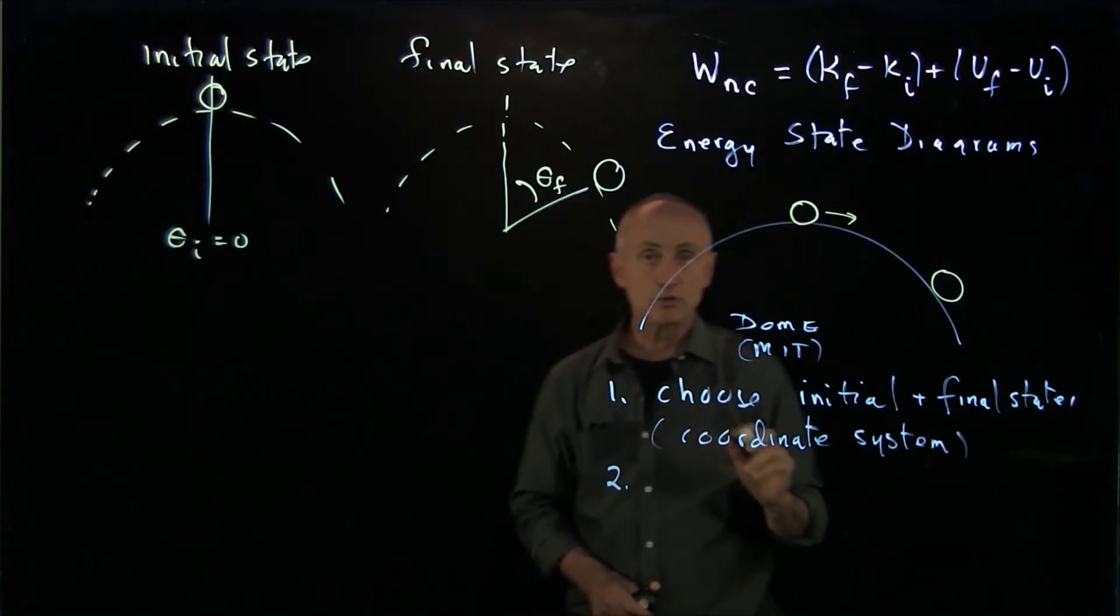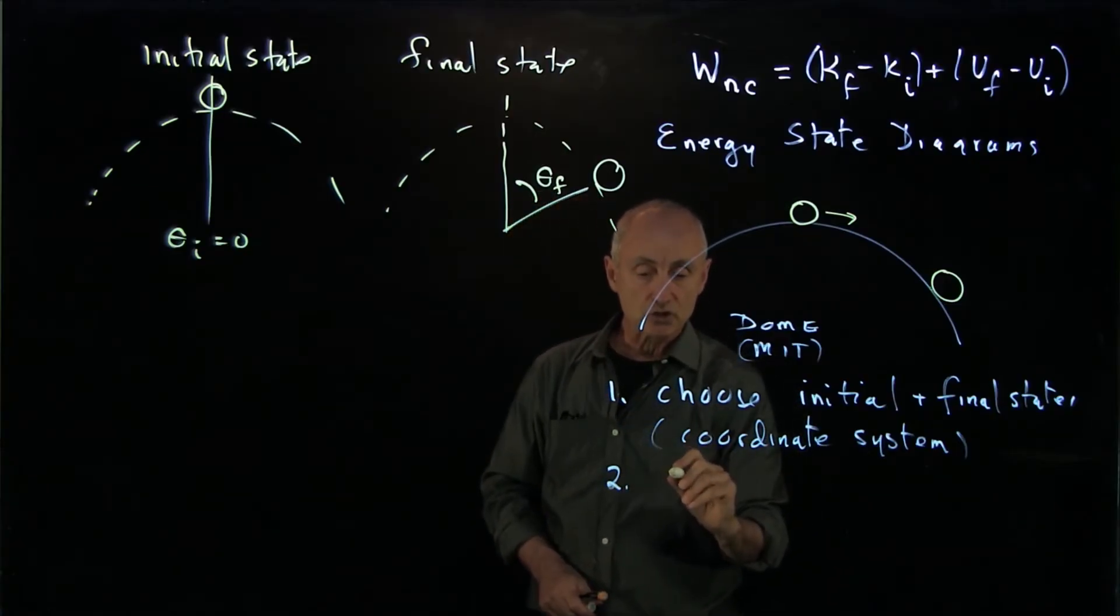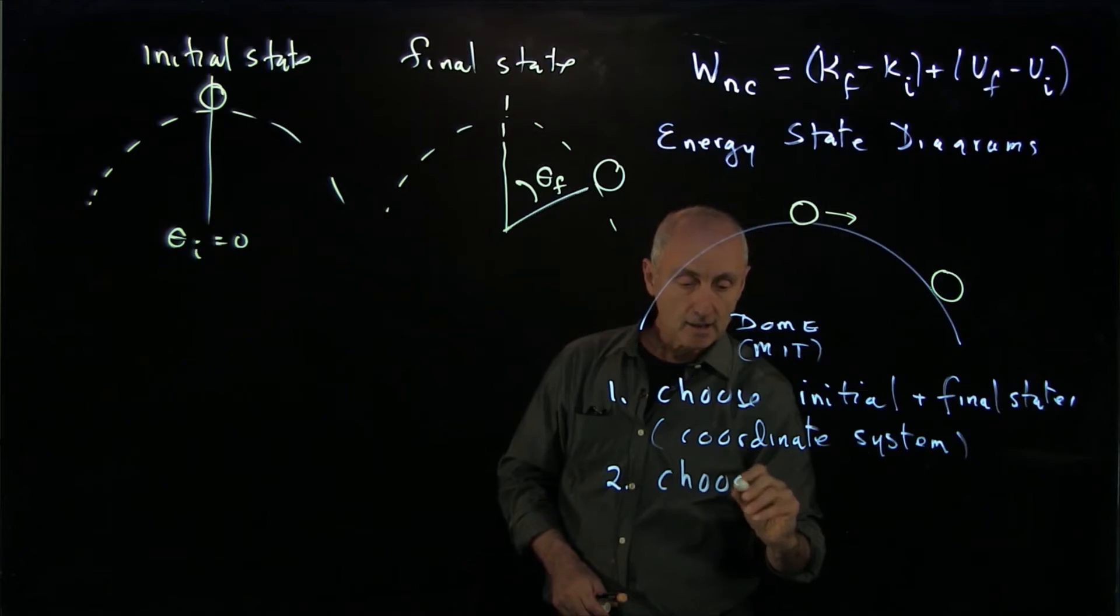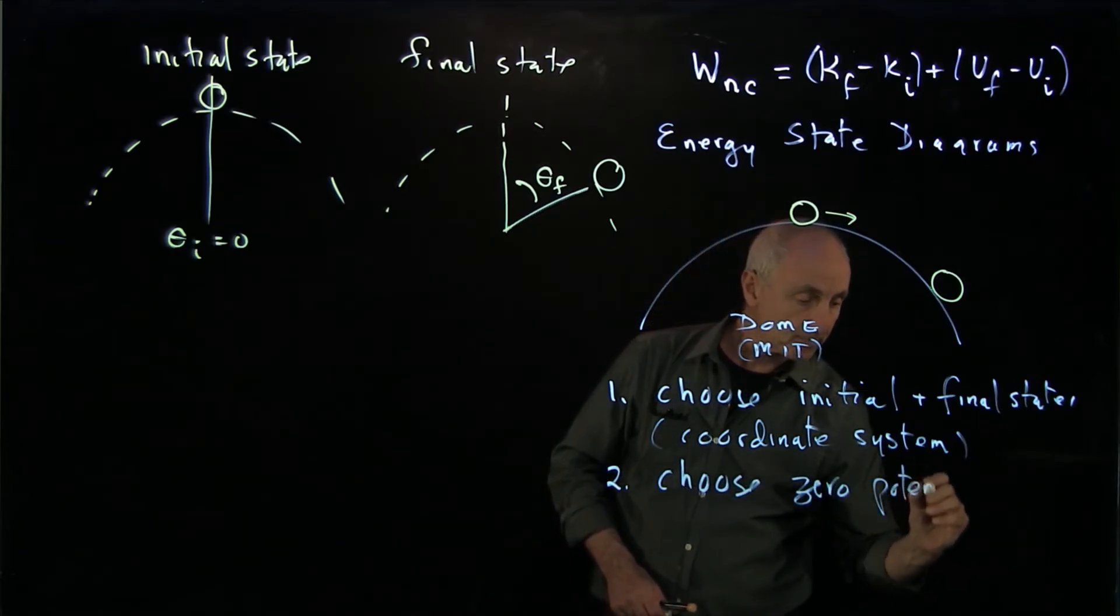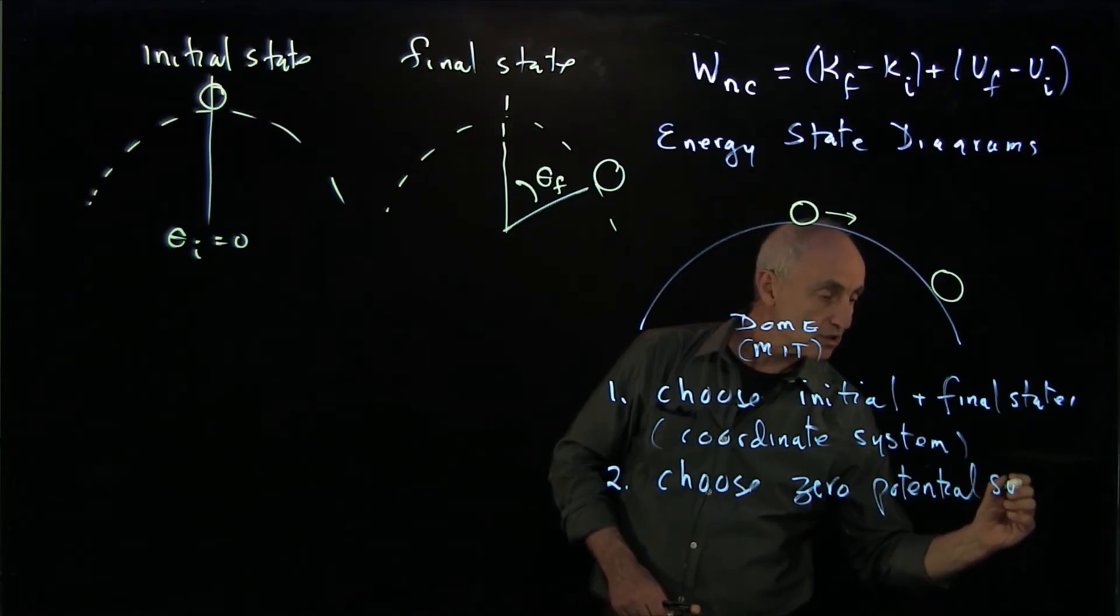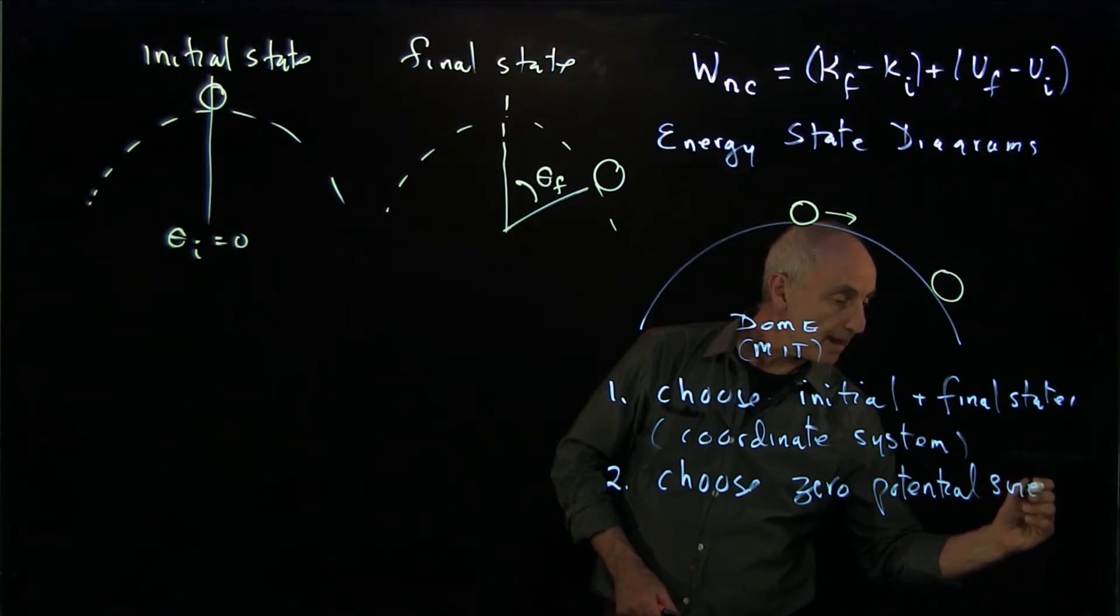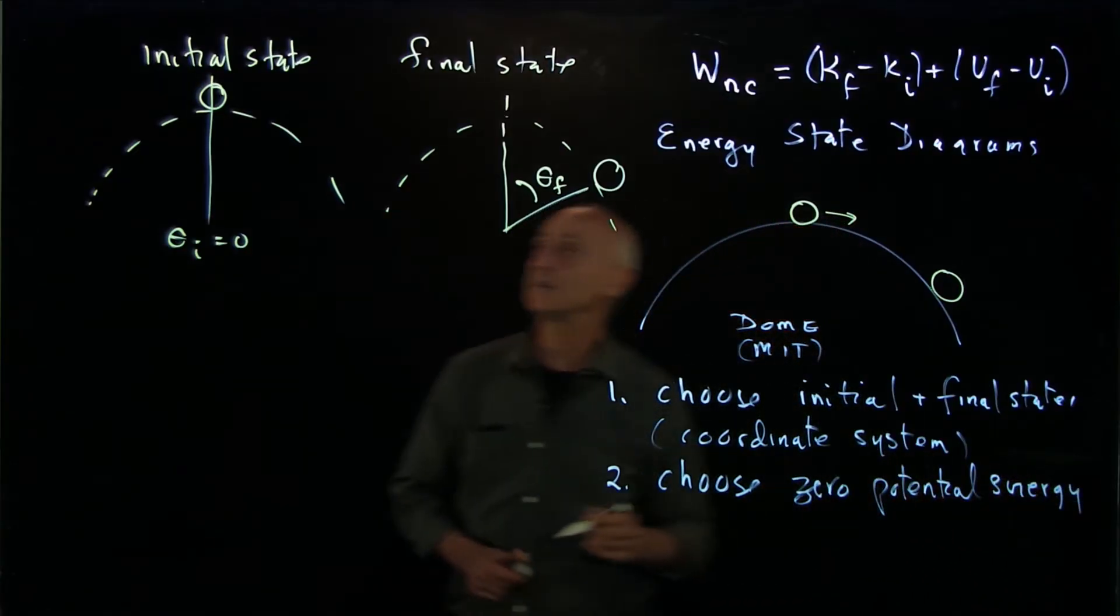Now, the important thing that we'll do in the energy diagram is to choose our zero potential energy. Where are we going to choose this? So we could say either a surface, we'll call that potential energy.